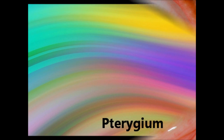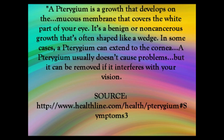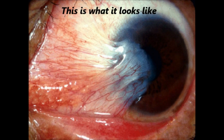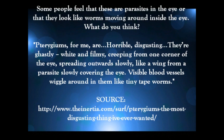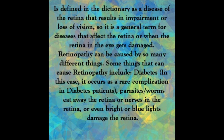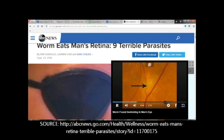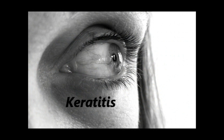Next is retinopathy. Retinopathy is a general term for any damage or disease that affects the retina, which impairs vision or causes blindness. Many different things can cause retinopathy, from diabetes to parasites and worms, and even bright lights or blue lights. Here's a news story about a man whose retina was eaten away by a worm. This article talks about nine different types of parasites and shows a picture of them.